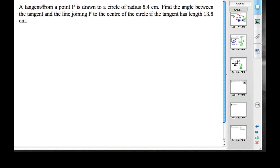Okay, in this problem, we have a tangent from a point P is drawn to a circle of radius 6.4. Find the angle between the tangent and the line joining P to the center of the circle if the tangent has length 13.6 centimeters.